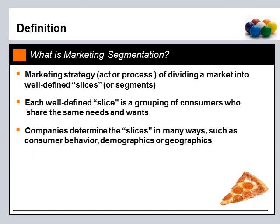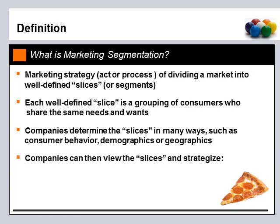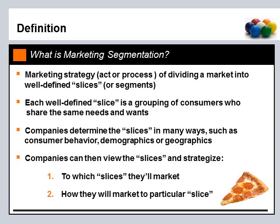Companies determine how they want to cut their own pizza — they determine the slices in many different ways. They can do that by consumer behavior, by geographics, or by demographics. The ultimate goal of market segmentation is for a company to view the slices and strategize two things: first, which slices they will market to, and second, how they will market to each particular slice.